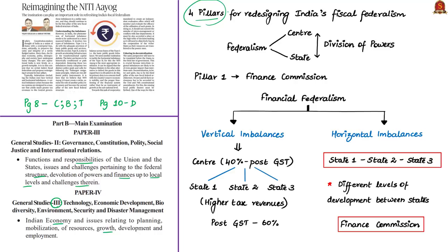Federalism means a division of powers between the central government and different state governments — the power is divided between the center and the states. Fiscal means something related to revenue or finances. So we can define fiscal federalism as the division of financial powers.